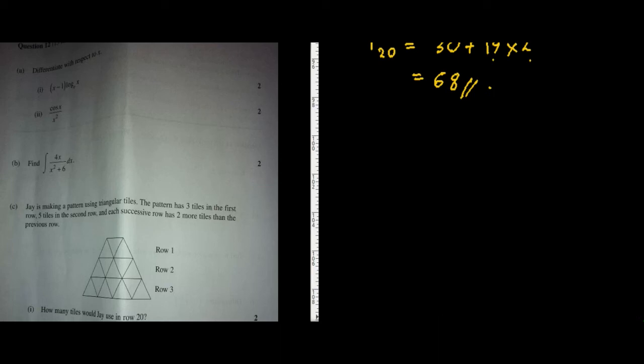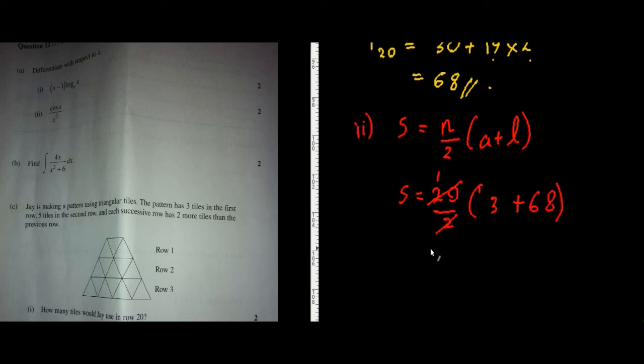How many tiles would Jay use all together to make the first twenty rows? So for part two I need to calculate the sum. The formula goes S n onto, n is equal to twenty, n on to 2, my first and the last, the original was simply three and then the last time that I had was forty-one. So what I have is seventy-one times, seventy-one times ten which is seven hundred and ten.